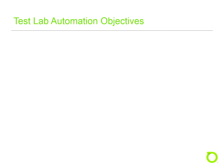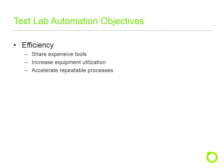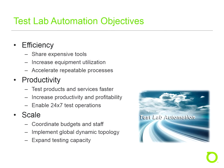The objectives of a test lab automation project include improvements to efficiency, productivity, and scale. Automating a test lab provides the opportunity to test devices, applications, and services faster and to establish 24 by 7 operations across the globe. Test automation reduces the cycle time of repetitive procedures such as regression tests and performance tests, and enables the sharing of expensive test tools, which leads to increased utilization of the entire lab.